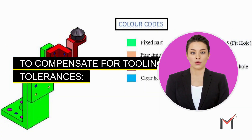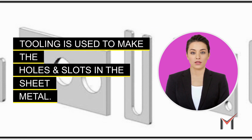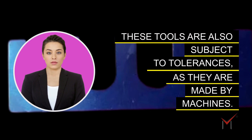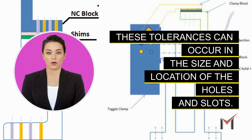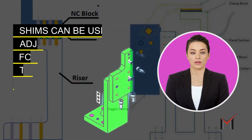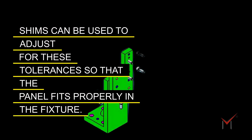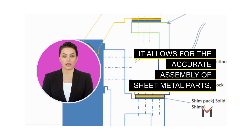To compensate for tooling tolerances: tooling is used to make the holes and slots in the sheet metal. These tools are also subject to tolerances as they are made by machines. These tolerances can occur in the size and location of the holes and slots. Shims can be used to adjust for these tolerances so that the panel fits properly in the fixture.